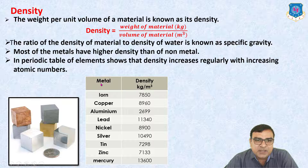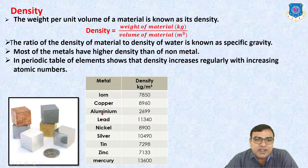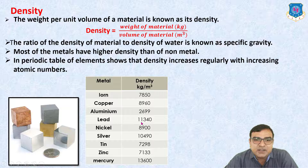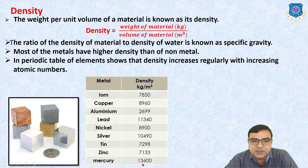Here are metals and their densities in kg per cubic meter. Iron has a density of 7850 kg/m³. Copper is 8960. Aluminum has a low density, which is why it is a lightweight material. Lead is a very heavy material with a density of 11,340. Nickel, silver, tin, zinc, and mercury are also listed. Mercury has a high density of 13,600 kg/m³.